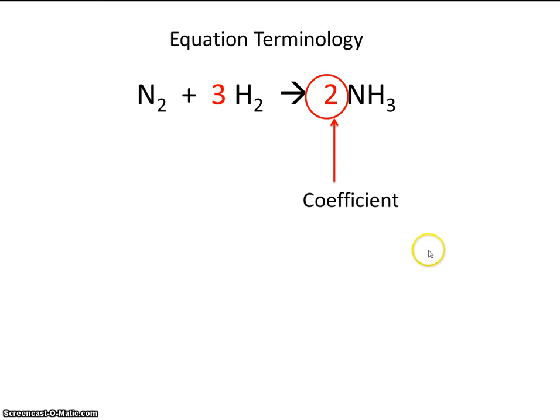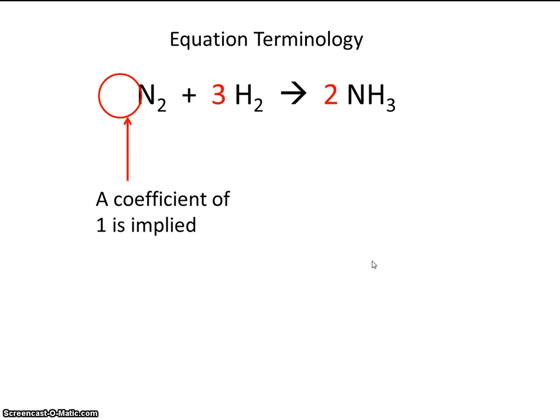And we'll contrast that with coefficients. Coefficients appear before the symbol or formula. Here you can see there is no coefficient. So in this case, a coefficient of 1 is implied. So the coefficients here would be 1, 3, and 2.